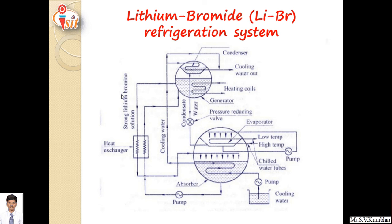This is the diagram of the lithium bromide refrigeration system. First we go through the different components: the generator is where water and lithium bromide solution are heated; it goes to the condenser where cooling water flows out; then it is sent back to the evaporator. A heat exchanger is also used with cooling water. A pump is used to circulate water continuously. The absorber unit and generator unit are shown — compressor is replaced by absorber plus generator unit — and next to the absorber is the evaporator where cooling effect is produced.